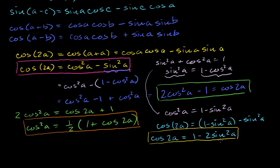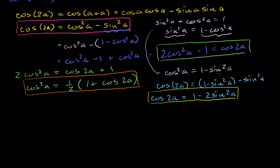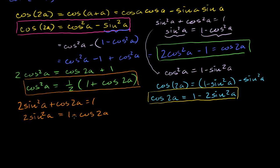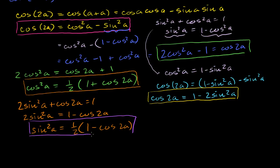If we want to solve for sine squared of a, we add 2 sine squared of a to both sides: 2 sine squared of a plus cosine of 2a equals 1. Subtracting cosine of 2a from both sides: 2 sine squared of a equals 1 minus cosine of 2a. Dividing by 2: sine squared of a equals one-half times (1 minus cosine of 2a). It's interesting — cosine squared and sine squared are identical in form, except cosine has a plus cosine of 2a and sine has a minus cosine of 2a.